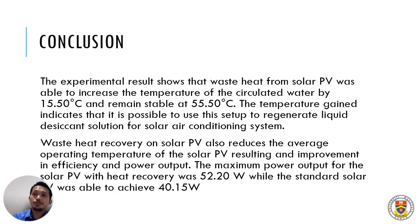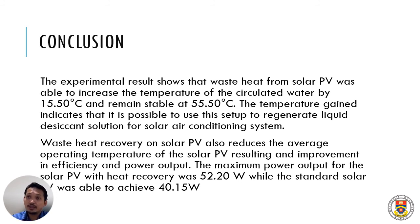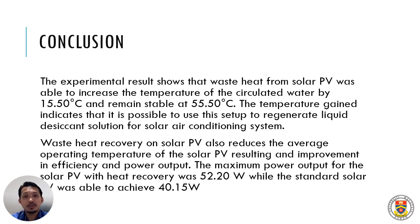As a conclusion for this study, the experimental results show that waste heat from solar PV was able to increase the temperature of the circulated water by 15.5 degrees C, and it remained stable at around 55.5 degrees C. This temperature indicates that it is possible to use this setup to regenerate liquid desiccant solution for a solar conditioning system. Also, with the waste heat recovered from the solar PV, they also have a reduced average operating temperature, thus achieving better power output and solar PV efficiency.